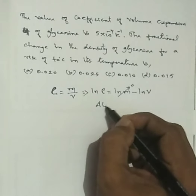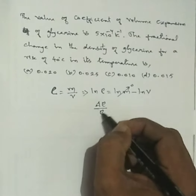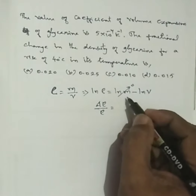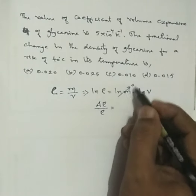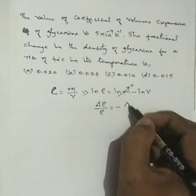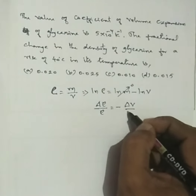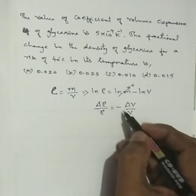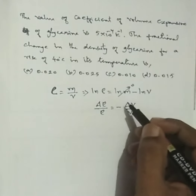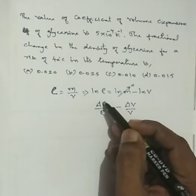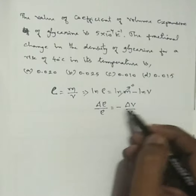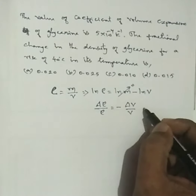This gives us: change in density divided by density equals minus delta V by V. The minus sign indicates that density and volume are inversely proportional.